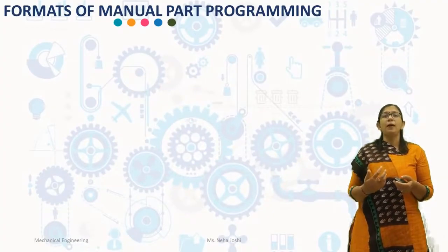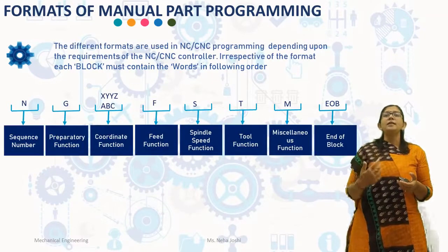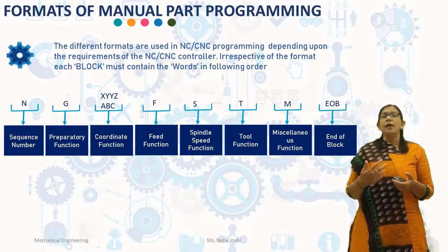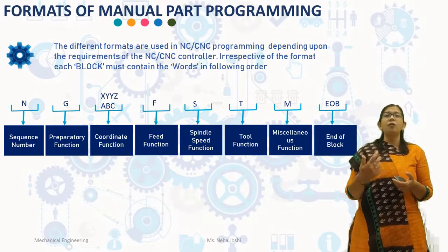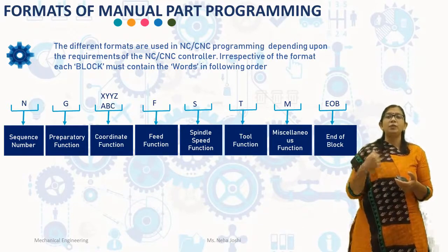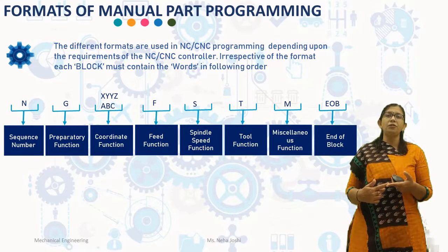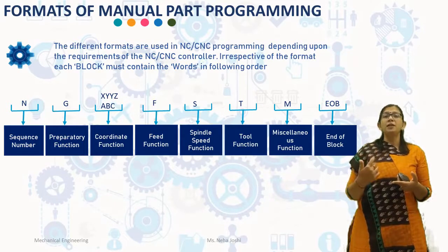We will discuss formats of manual part programming. Different formats are used in NC/CNC programming depending upon the requirement of the NC/CNC controller. Irrespective of the format, each block must contain the words in the following order, as seen in the diagram: sequence number, preparatory functions, coordinate functions, feed function, spindle functions, tool functions, miscellaneous functions, and end of block.